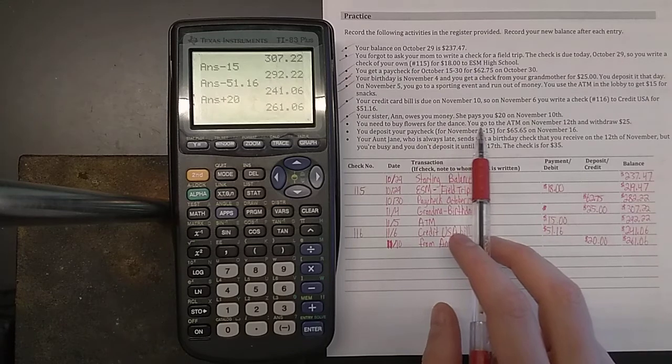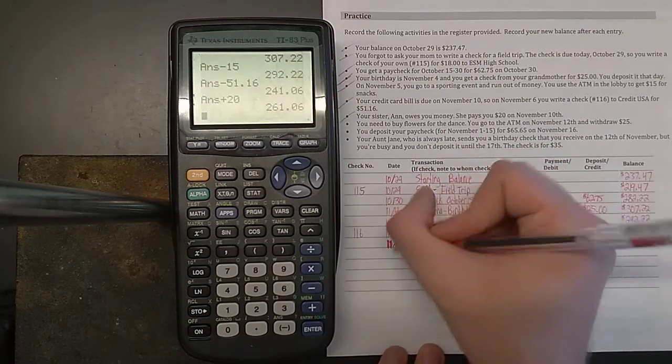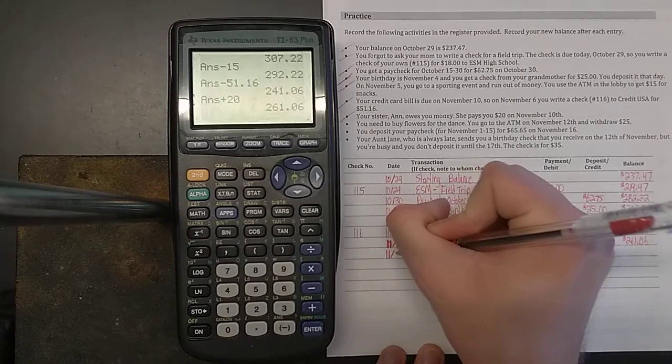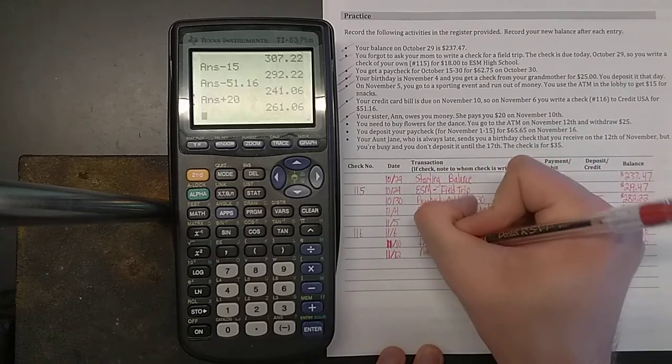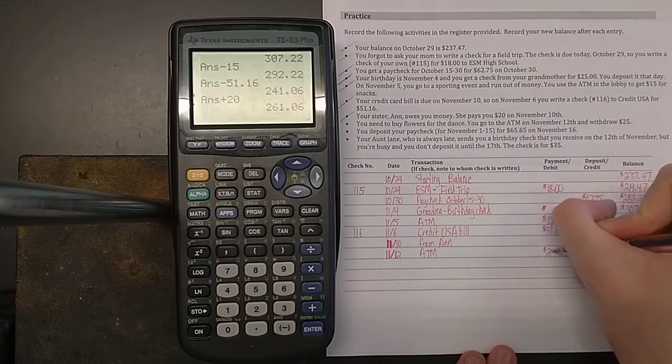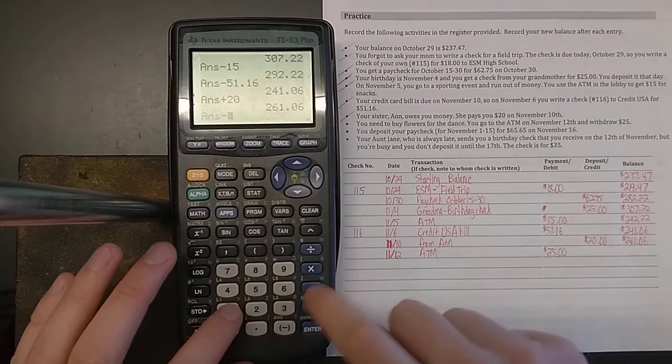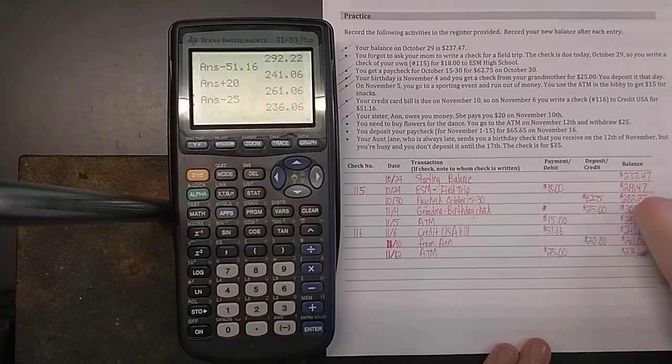You need to buy flowers for the dance. You go to the ATM on November 12th and withdraw $25. You're taking money out of the account. So we subtract. And you're left with $236.06.